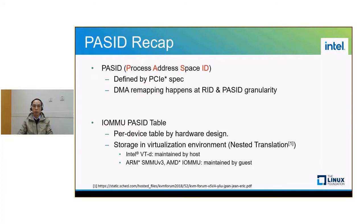PASID stands for process address space ID. With the introduction of it, DMA remapping happens at the request ID and PASID granularity. To achieve such isolation granularity, platform vendors should also support an IOMMU PASID table. It is a per-device table by hardware design, and its storage in virtualization environments differs across vendors. Intel VT-d is maintained by host under nested translation, but for ARM SMMU version 3 and AMD IOMMU it is maintained by guest under nested translation. This difference results in different ways to set up IOMMU nested translation for guest.